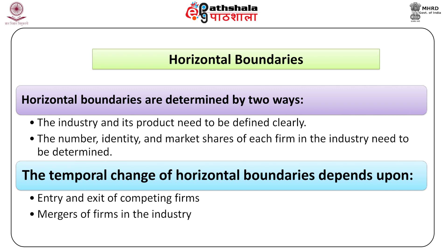Temporal changes in horizontal boundaries depend upon mergers of firms in the industry. If some firms exit the industry or if firms merge, then horizontal boundaries widen or expand, leading to increased industry concentration and higher profits. Similarly, if more firms enter the industry, there will be a narrowing of horizontal boundaries, and industry concentration will decline, leading to lower profit. Therefore, all existing firms in an industry try to keep horizontal boundaries as wide as possible through barriers to entry.